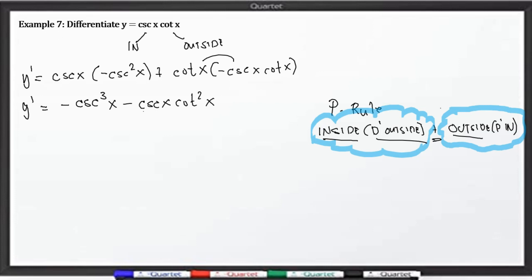Ngayon, may common factor po tayo na cosecant. So ang gagawin po natin, ilalabas po natin yung cosecant na yan. So y prime is equal to negative cosecant x times the quantity. So this will become positive na po ito. Cosecant squared x. Wala na po dito. Minus. Or that will be plus. Kasi negative yung nilabas natin. Plus cotangent squared of x. So ito po yung ating magiging final answer.